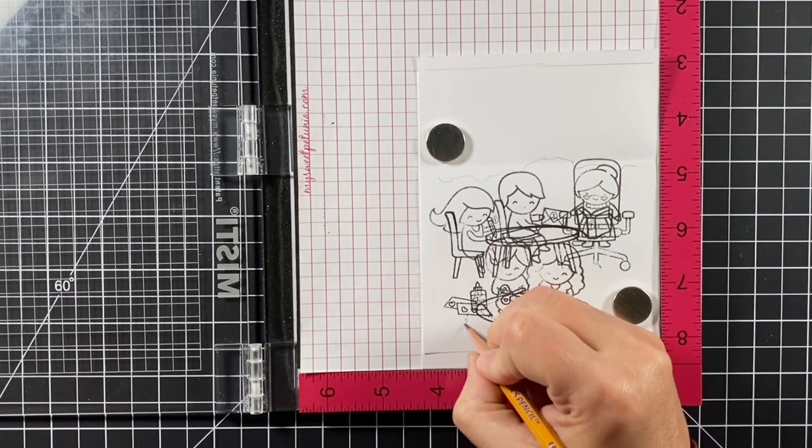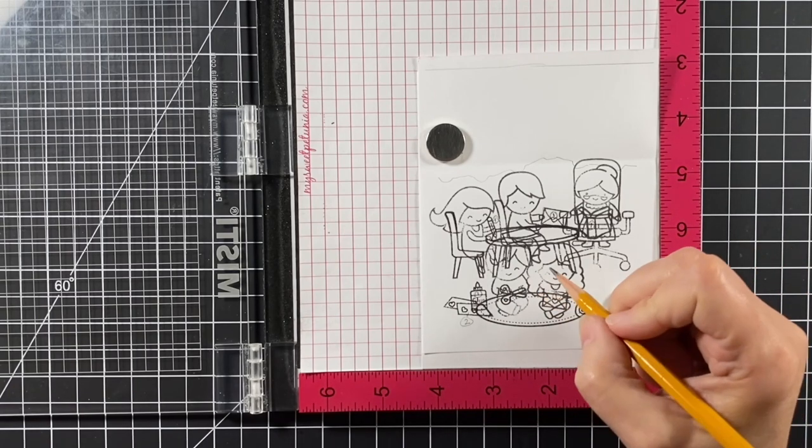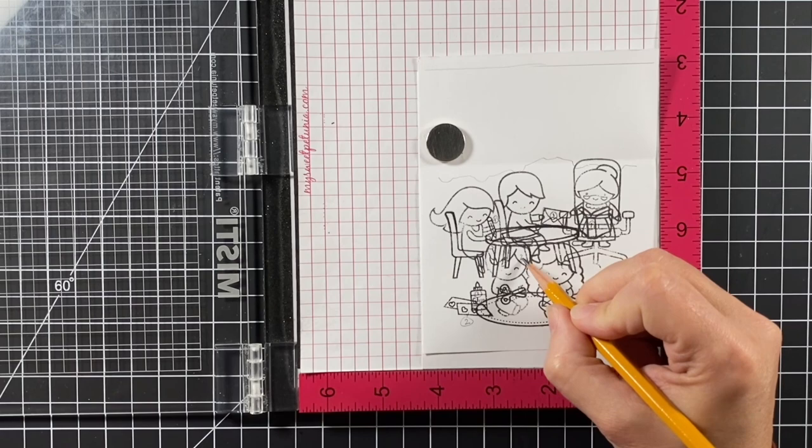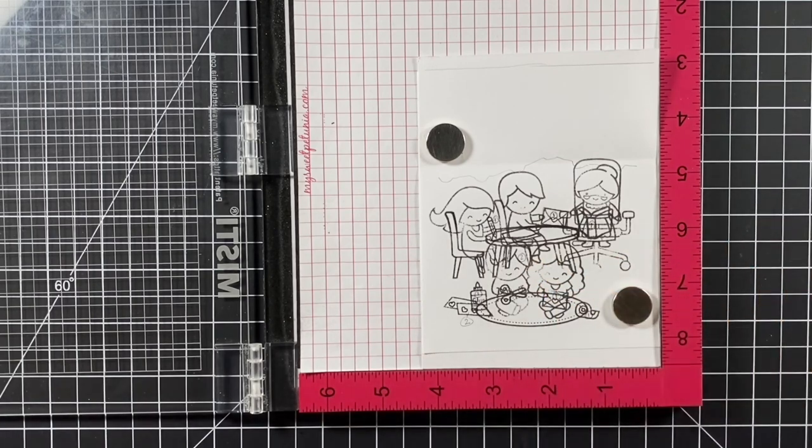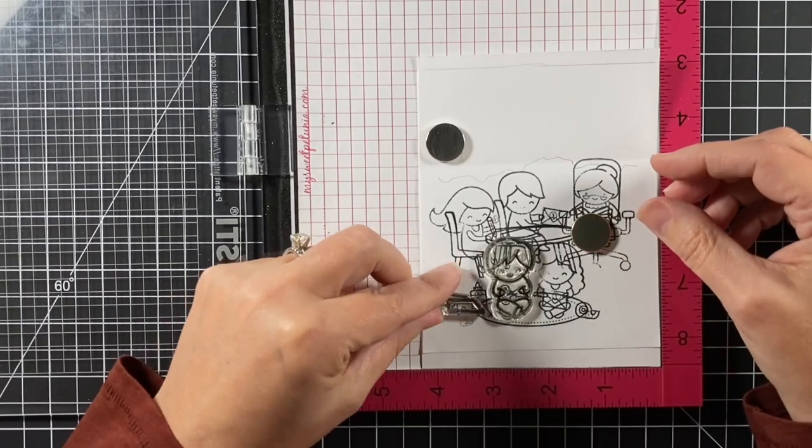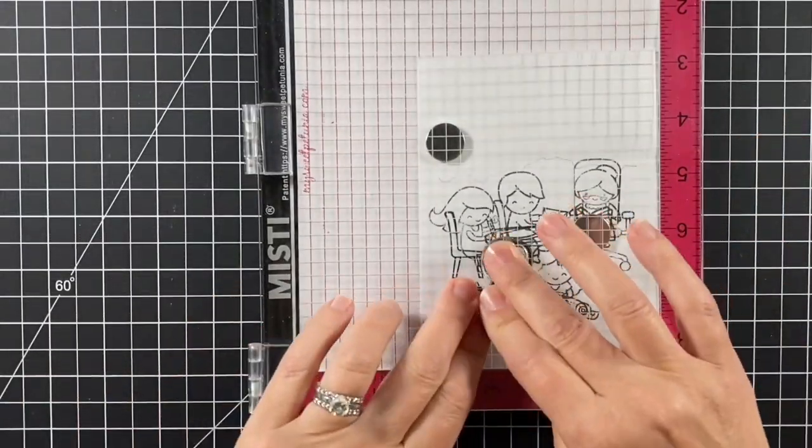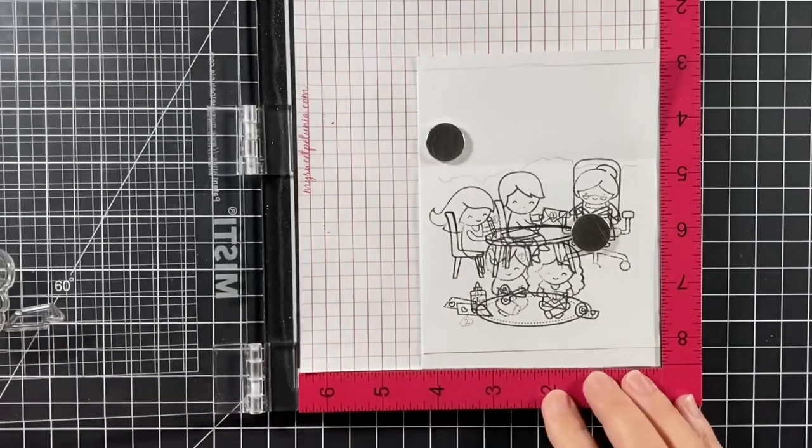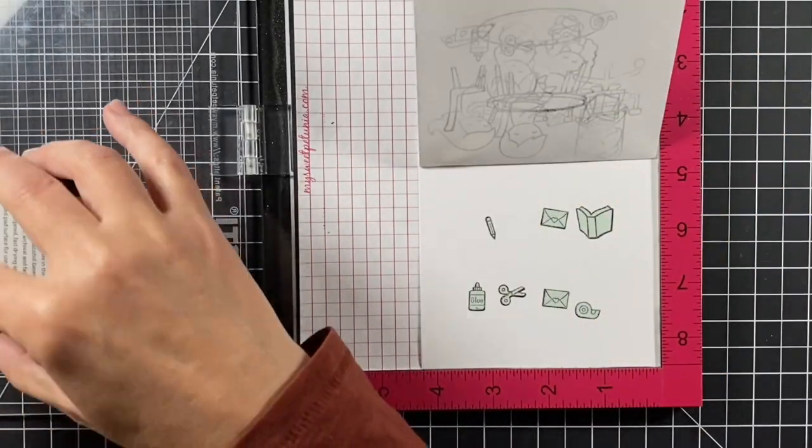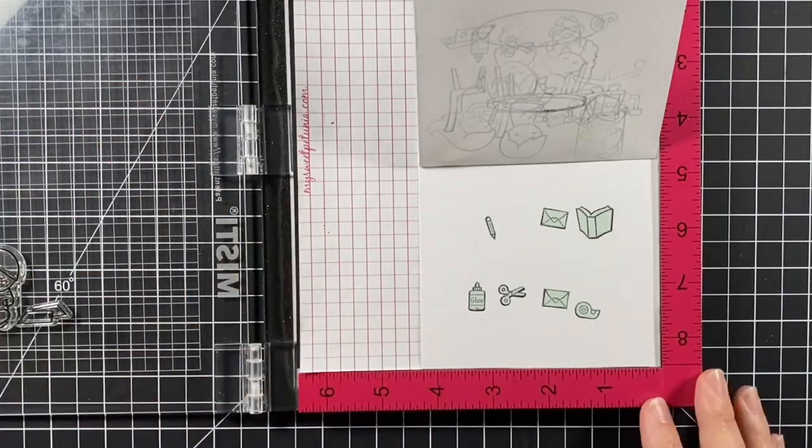Now I'm placing the masks on the images that are stamped on the paper. I'm putting a number two on anything that I think would be stamped next, like the little boy and the paper on the floor.